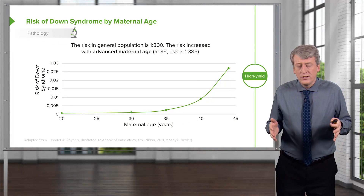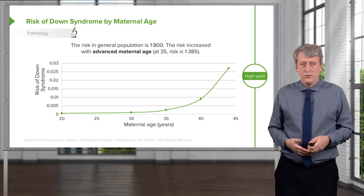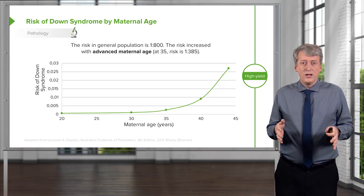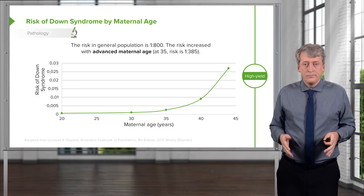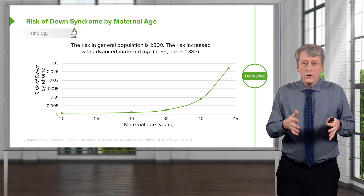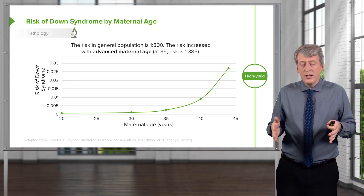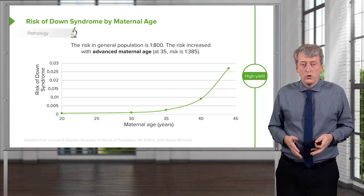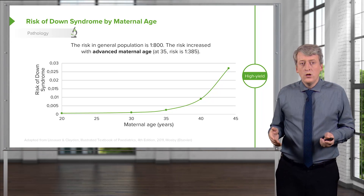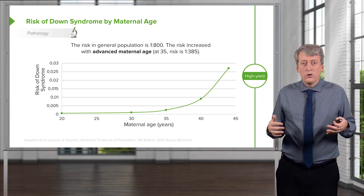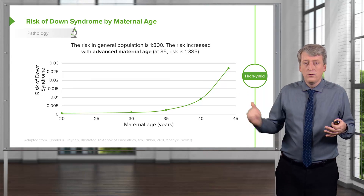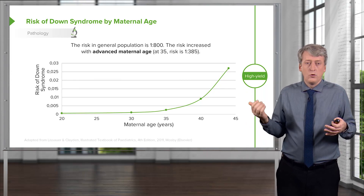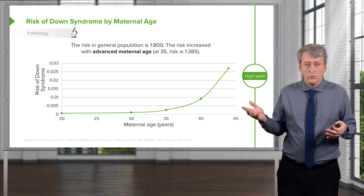Now let's look at risks for Down syndrome. The biggest risk to consider is maternal age. As women get older, it becomes more and more likely for them to create eggs with an extra copy of the 21st chromosome. Generally, we consider age 35 a point at which the risk starts to really come up, and after 40 it comes up dramatically, as you can see in the risk data shown here.